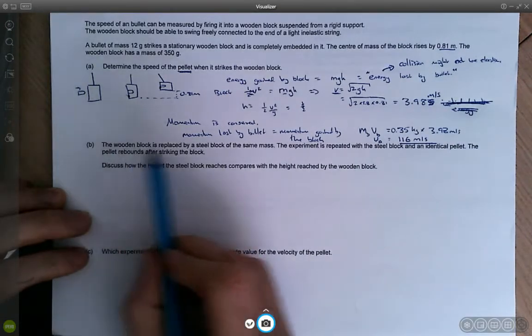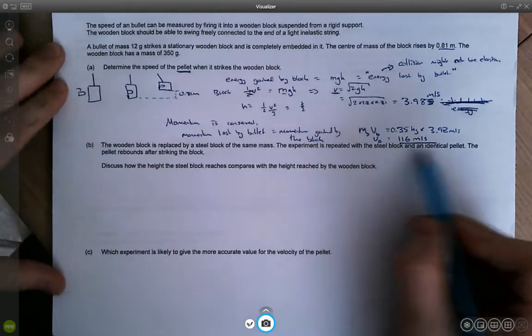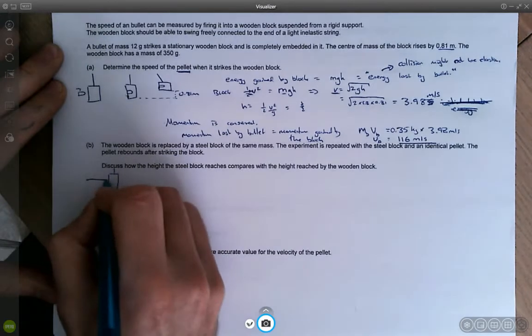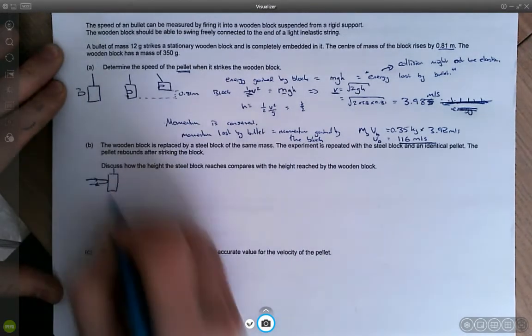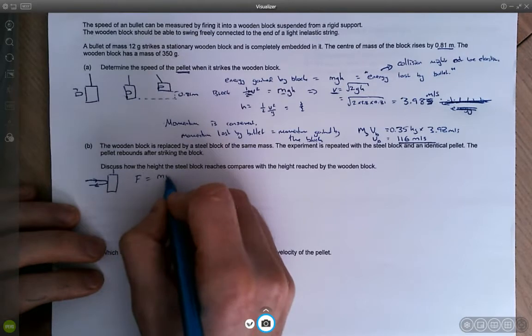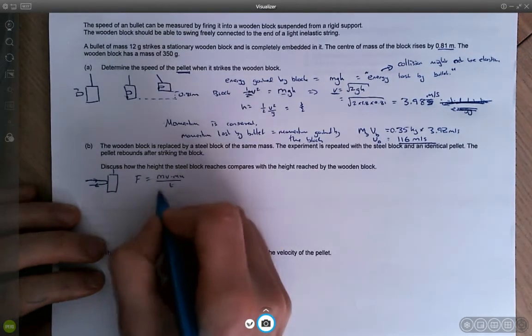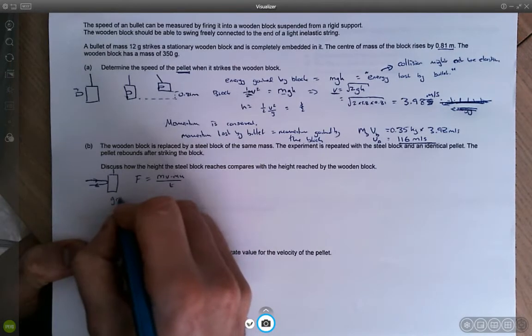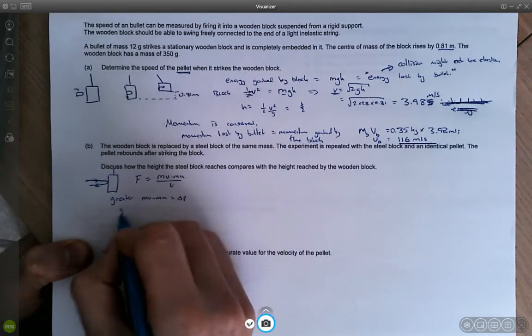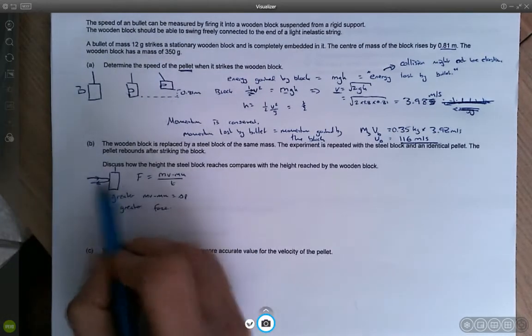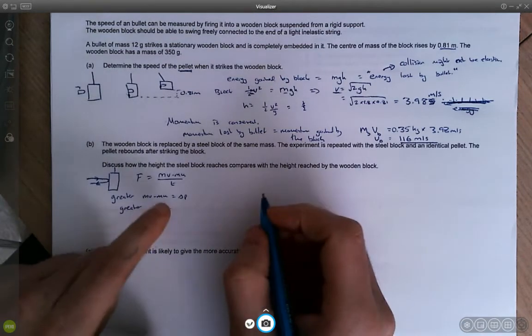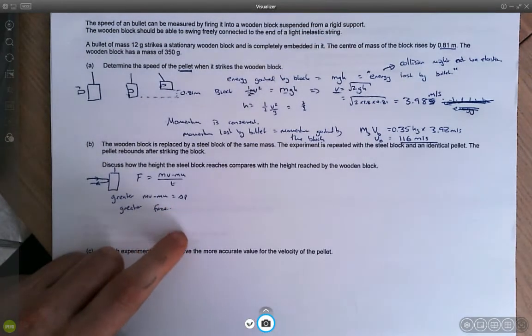Part B, the wooden block is replaced by steel block of the same mass. The experiment is repeated with the steel block and identical pellet. The pellet rebounds after striking the block. So the bullet comes in and rebounds out. So remember that force is mv minus mu over t, so change in momentum over time. So we've got a much greater change in momentum or delta p, which means we've got a greater force from the block on the bullet because we've had to stop it and turn it around and make it go backwards. So there is a greater force and a greater change in momentum.